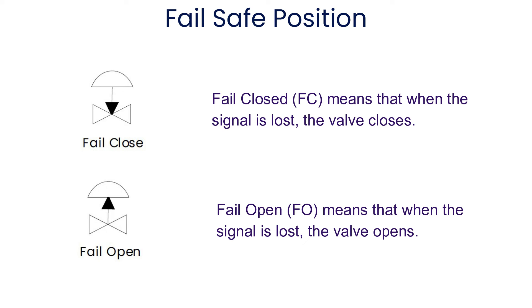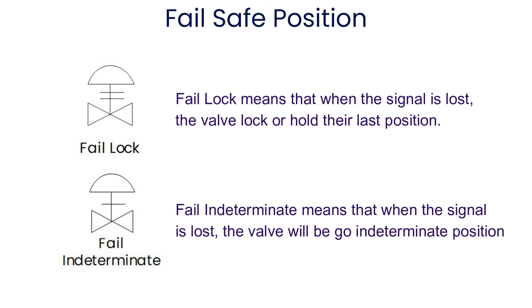Let's understand some fail positions of valves. Fail closed means that when the signal is lost, the valve closes. Fail open means that when the signal is lost, the valve opens. Fail lock means that when the signal is lost, the valve locks or holds its last position. Fail indeterminate means that when the signal is lost, the valve goes to an indeterminate position.